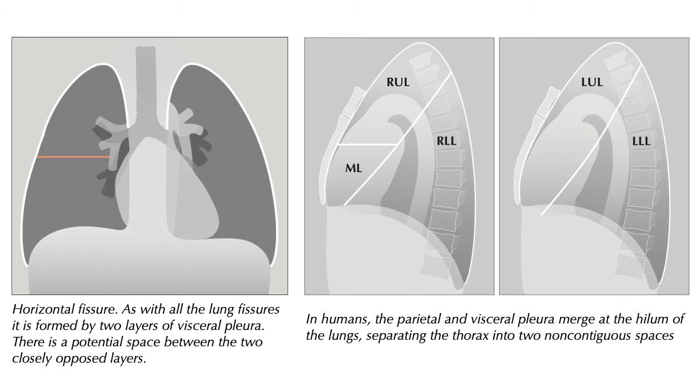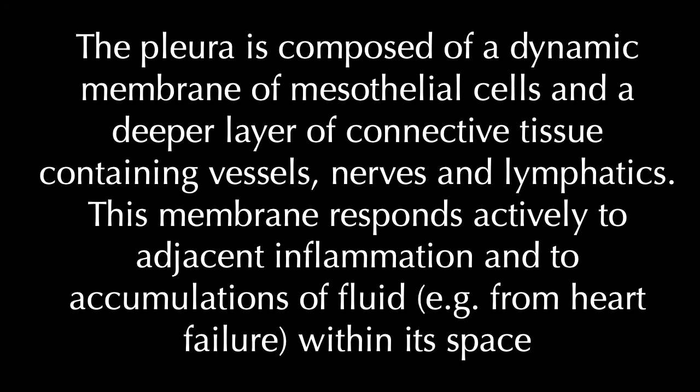In humans, the parietal and visceral pleura merge at the hilum of the lungs, which separates the thorax into two non-contiguous spaces. The pleura is composed of a dynamic membrane of mesothelial cells and a deeper layer of connective tissue containing vessels, nerves, and lymphatics. This membrane responds actively to adjacent inflammation and accumulations of fluid, such as when someone has left-sided heart failure within its space.